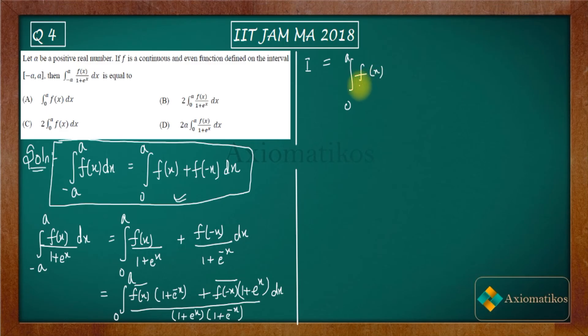Let us write this thing like this: f(x), 1 plus e to the power minus x. Now here you have 1 plus e to the power minus x plus 1 plus e to the power x. So now what you can do? You can simply just add this up and you will get zero to a f(x) dx.